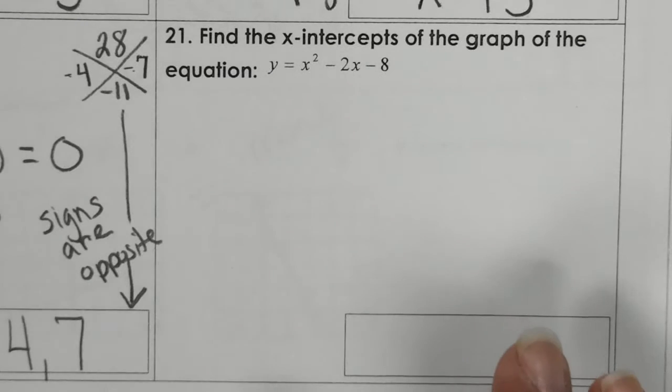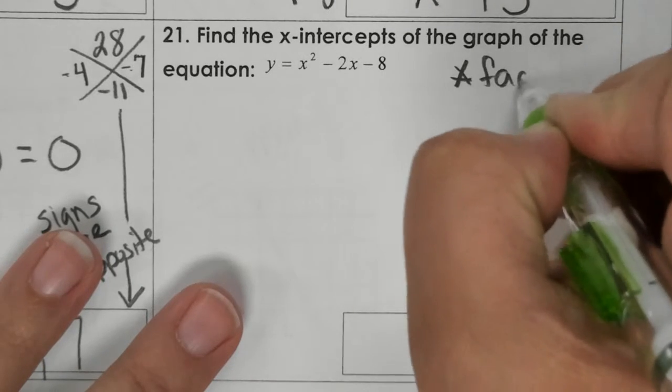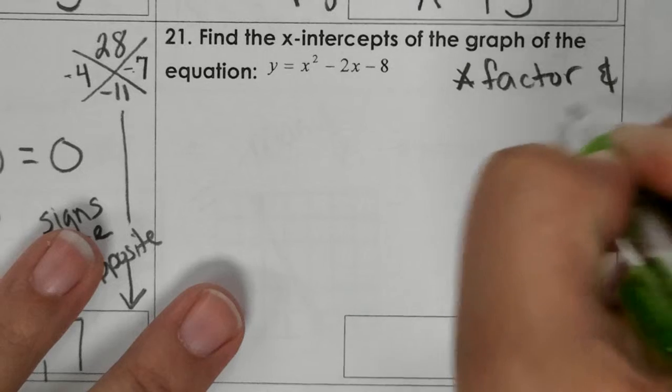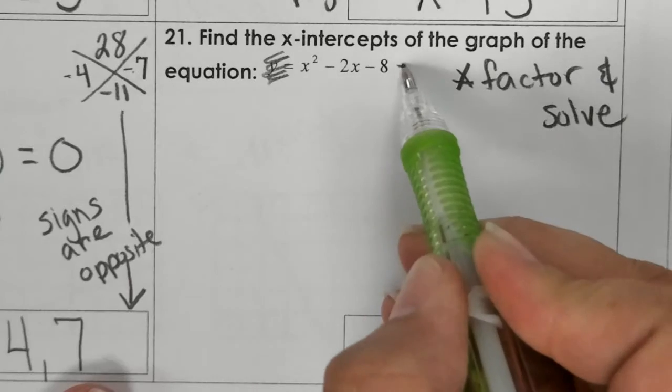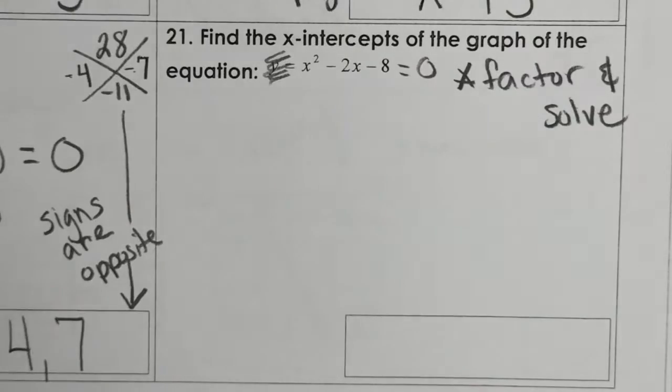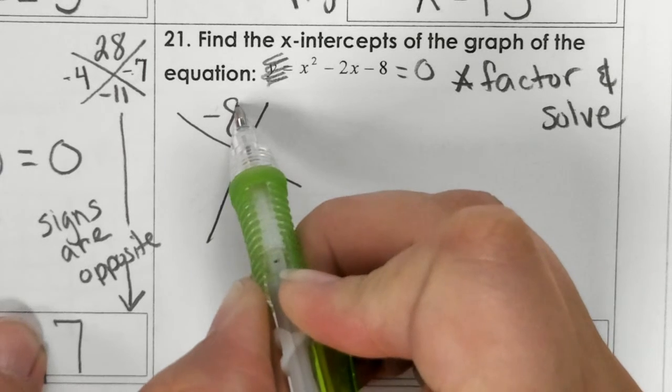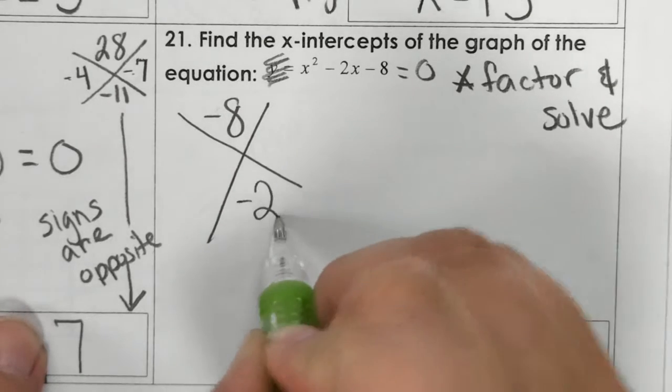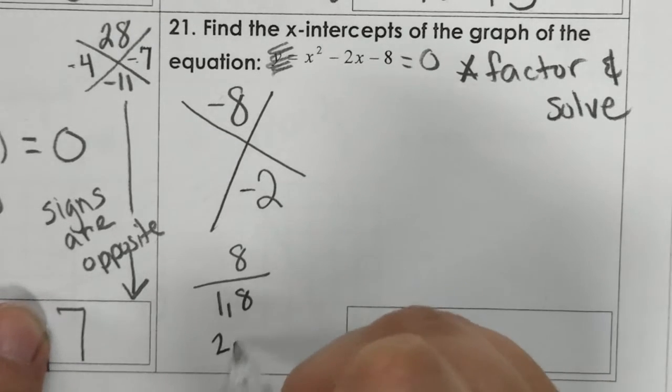On problem 21, it says find the x-intercepts of the graph of the equation. I know it doesn't say the word solve or factor. So we are going to make a note that this is a factor and solve problem. You just take the y equals off and say equals 0. We should try x-factor on this and see if it works. So I put negative 8 on the top, negative 2 at the bottom. The factors of 8 are 1 and 8, 2 and 4.